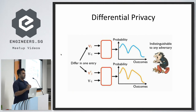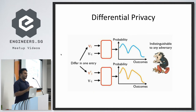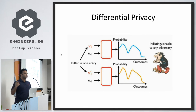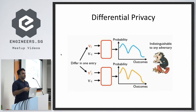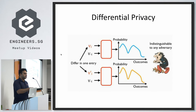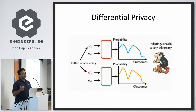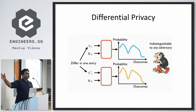Differential privacy deals with building databases and queries where you can still collect data, but do it such that I don't know for sure whether you have diabetes. Imagine two datasets that differ only in one record. Differential privacy is about building query systems that run the query on the database as normal, but the result is not exact — it's the count plus some probabilistic noise added over the count.